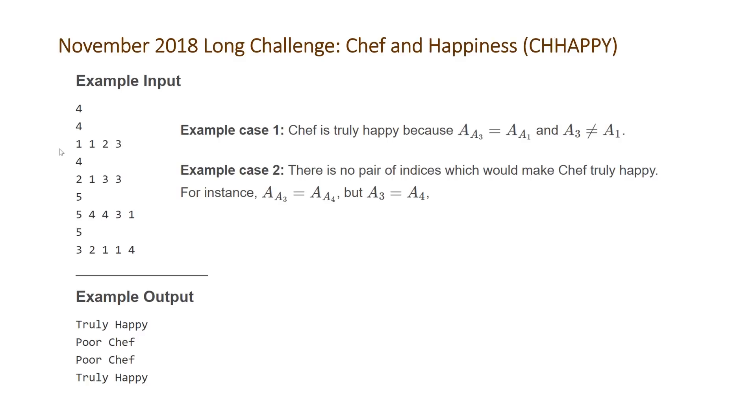So the only way Chef can be happy at a minimum is if there are elements that have the same value. And then the second condition is that we need to find two elements that when the values of those elements are used as indexes lead to the elements with the same value. And then on top of that, we need to make sure that you're not just finding two elements that originally had the same value, so they're pointing to the same element.